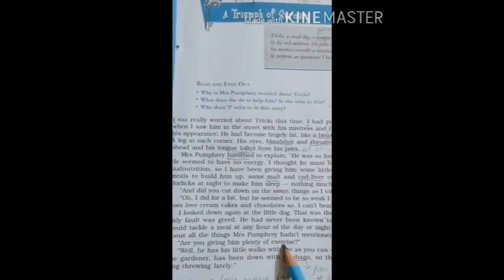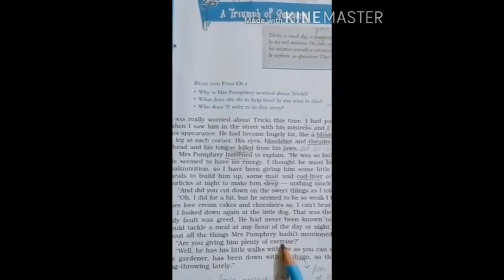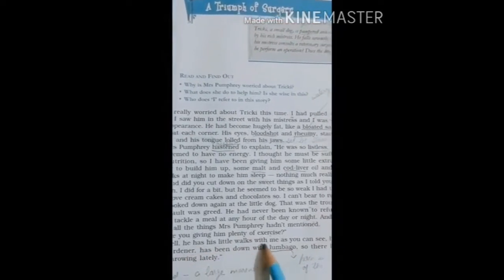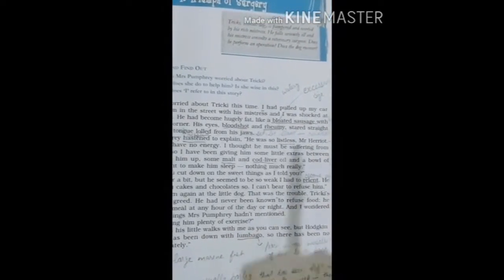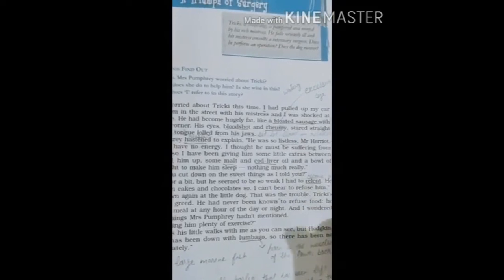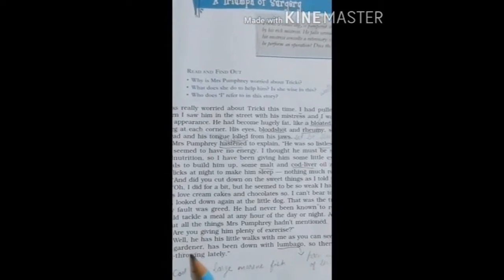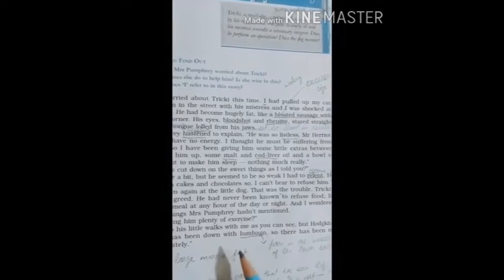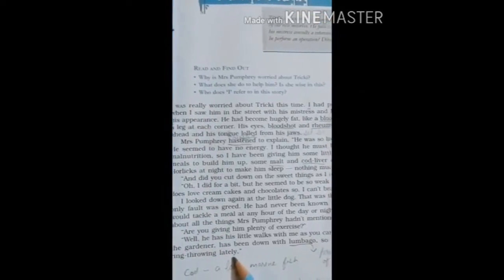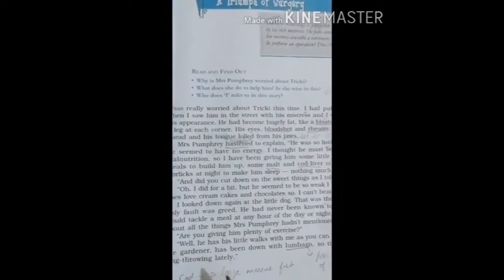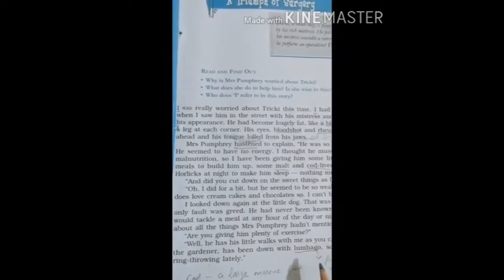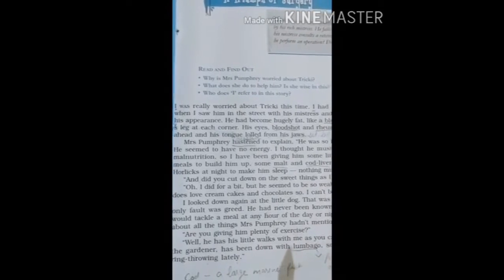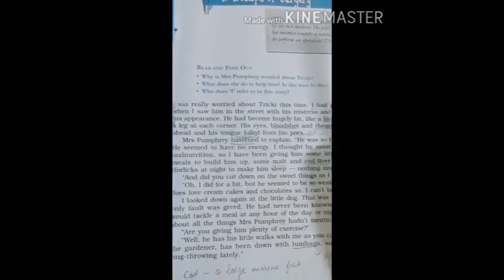Are you giving him plenty of exercise? Well, he has his little walks with me, as you can see. But Hoggins, the gardener, has been down with lumbago. Lumbago means pain in muscles and joints of the lower back. So there has been no ring throwing lately. It means they were not giving proper exercise to him.